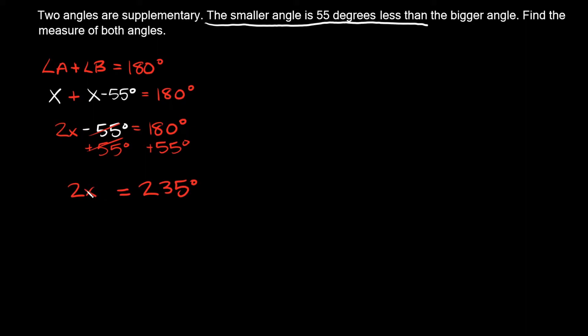Last thing we have to do to solve for X is get rid of this 2. In order to undo the multiplication we have to divide by 2. And what you do to one side you do to the other. So then the 2's on this side are gonna cancel out. So then we're just gonna be left with X on this side, and then that's gonna be equal to 235 divided by 2, and that's equal to 117.5 degrees.